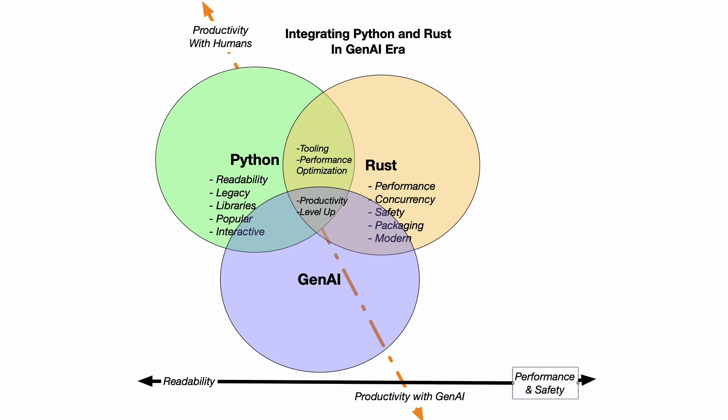Integrating Python and Rust in the generative AI era is a very interesting proposition, because it requires looking at the strengths of both languages, deciding what the integration points are, when it's best to use Python, when it's best to use Rust, and how generative AI in particular enhances both languages.